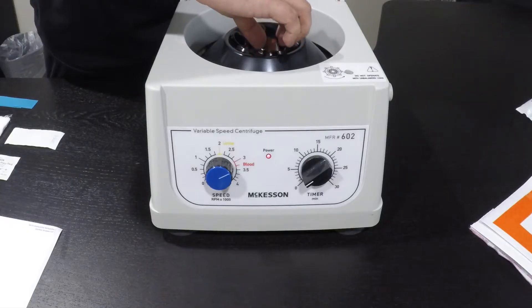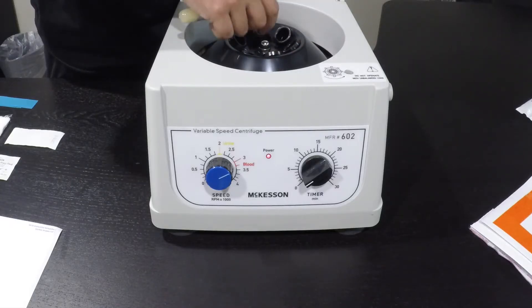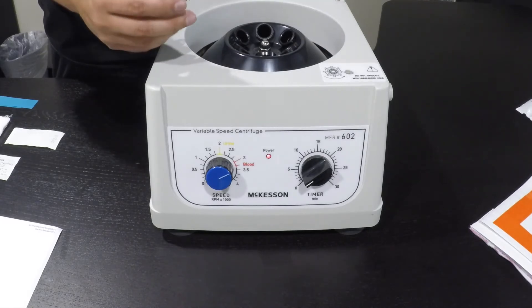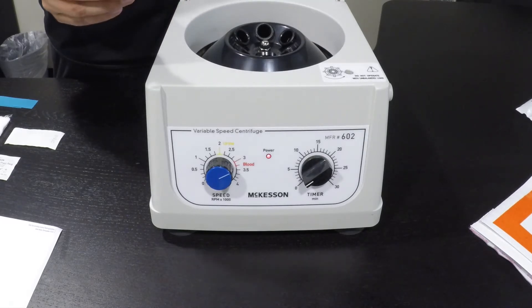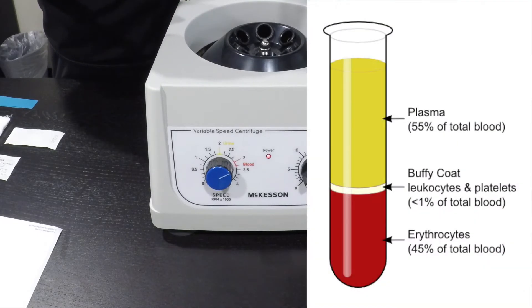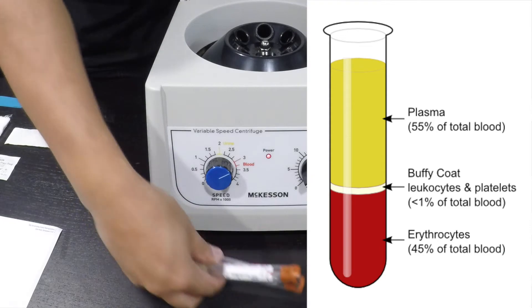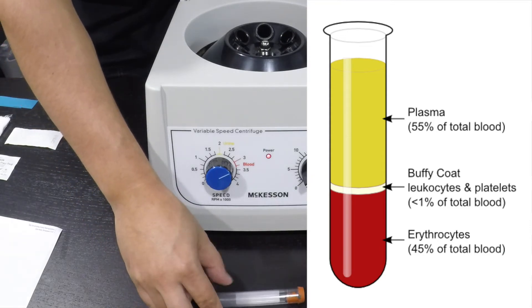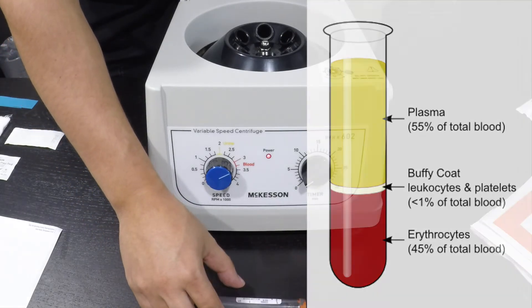Once the centrifuge has come to a complete stop, the MA will remove the blood and confirm that it has been spun correctly and separated into three different serums.